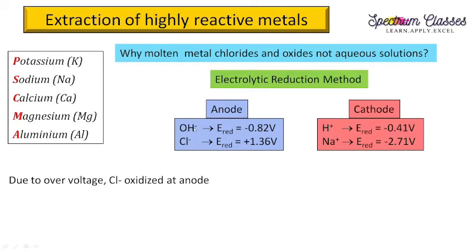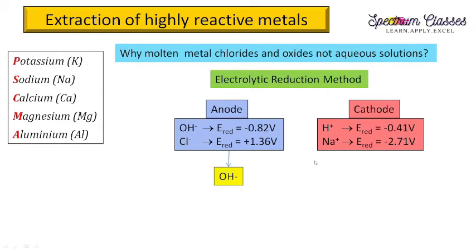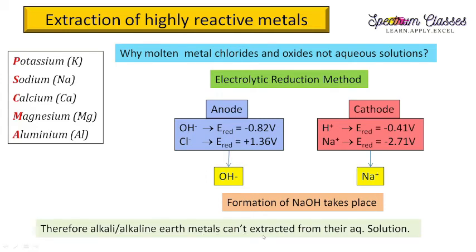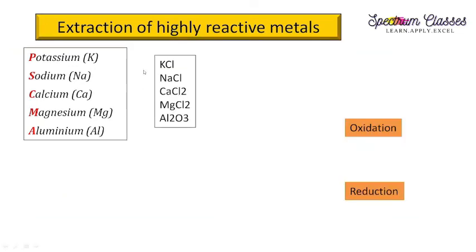Because of overvoltage, OH⁻ is left behind. In the aqueous solution of NaCl, OH⁻ and Na⁺ are left behind, so instead of getting sodium metal from NaCl, NaOH is formed. That is the reason why alkali and alkaline earth metals cannot be extracted from their aqueous solution — rather, they are extracted from their molten metal chlorides and oxides.